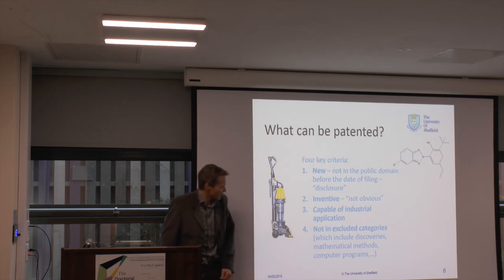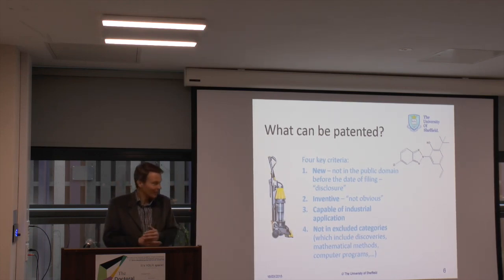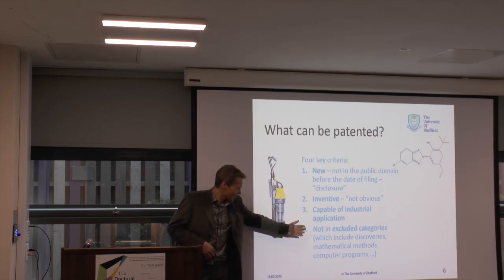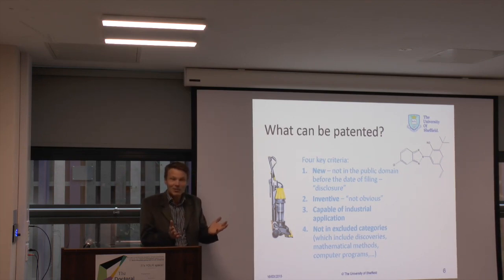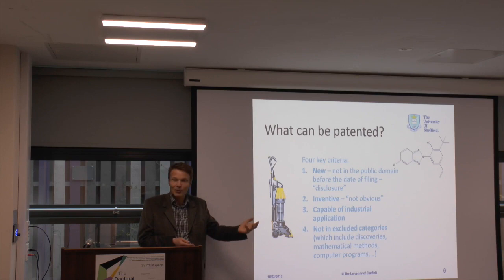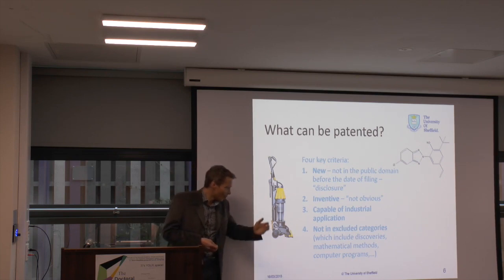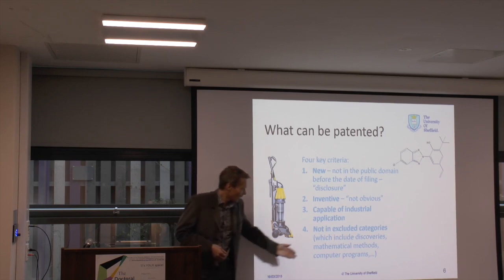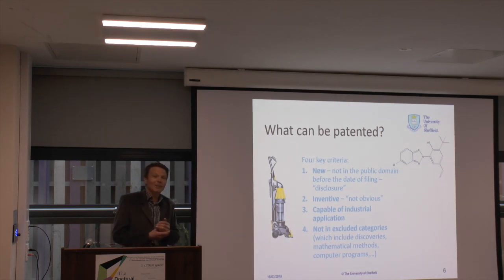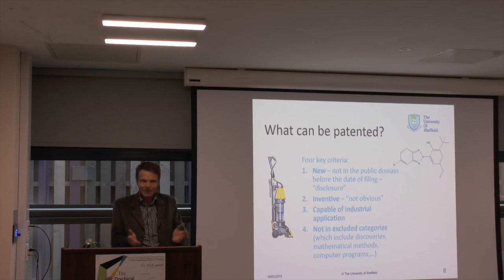The third criterion is that your invention must be capable of industrial application — it can't just be an idea, it must have a real-world use. There are also various excluded categories from patenting. For example, discovery: you can discover a new molecule, but if you're not demonstrating it as a real-world application — whether as a new drug or a new adhesive — then what you would claim are its properties as that drug or adhesive rather than just claiming a new molecule. Similarly, a mathematical method or algorithm in its own right is not patentable unless you can demonstrate you are applying it to have a technical effect.